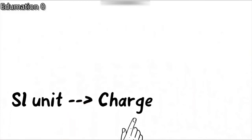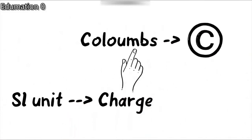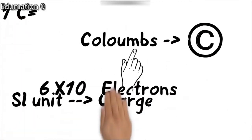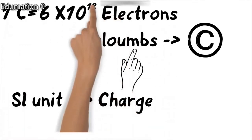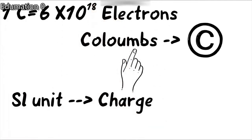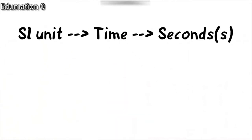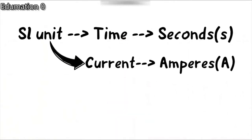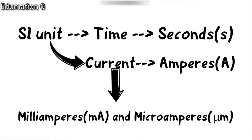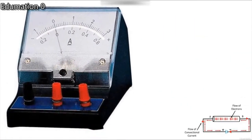The SI unit of charge is coulombs (C). One coulomb has the charge of nearly 6 × 10¹⁸ electrons. The SI unit of time is seconds (S). The SI unit of current is amperes (A). Other units of current are milliampere (mA) and microampere (μA). The device used to measure electric current is an ammeter.